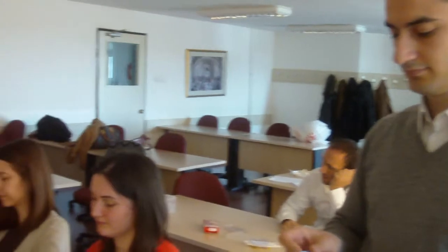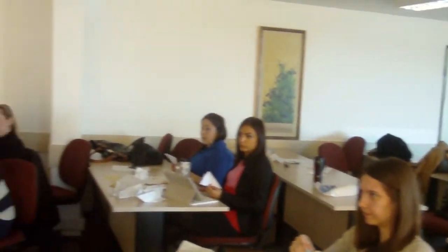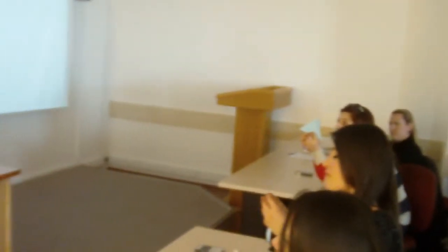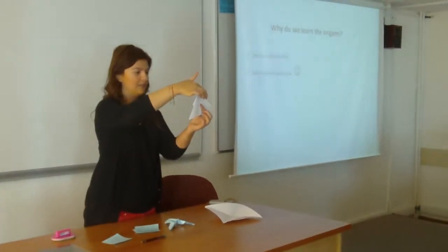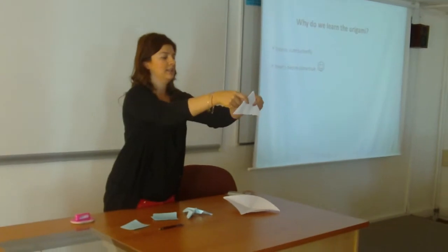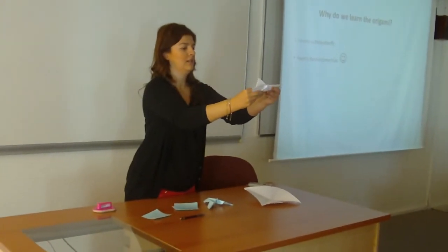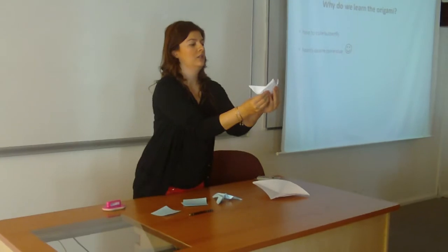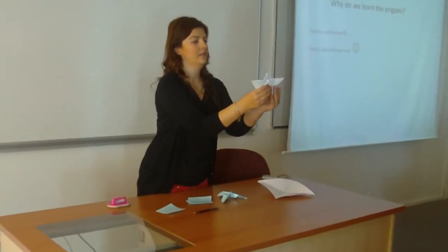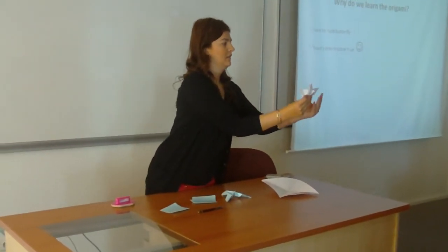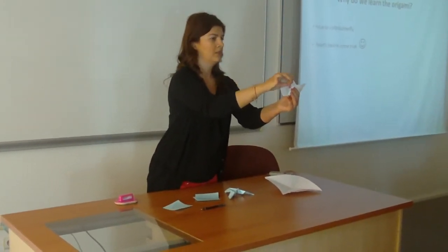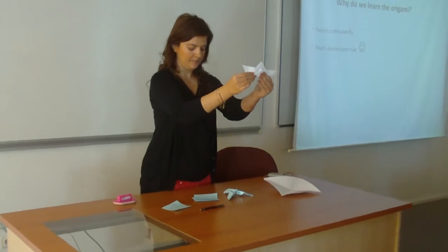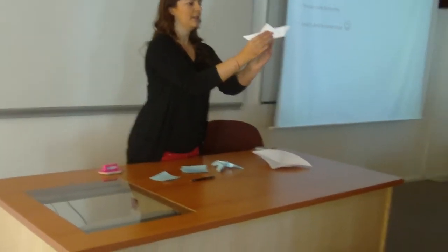Are we all done? We should fold the triangle horizontally, but not to the center, because we should have a blank part, like this. We should have this part. And turn back.